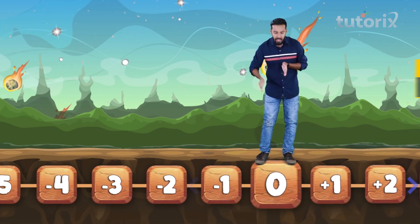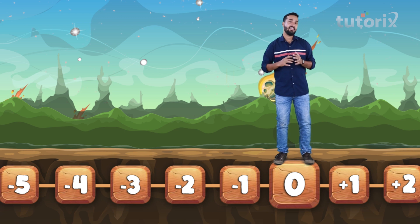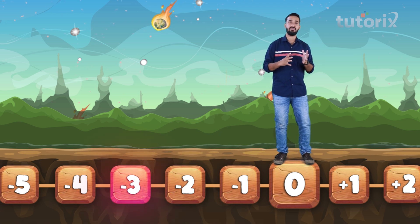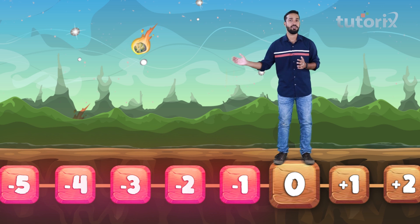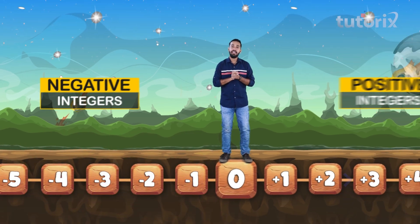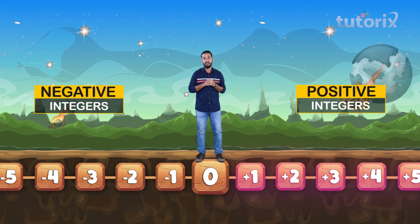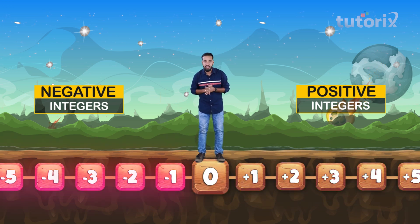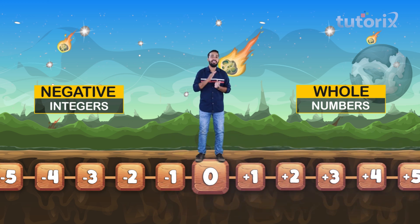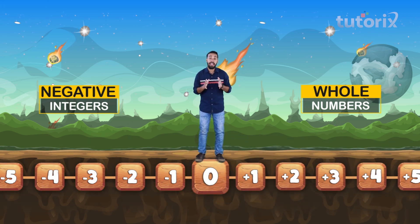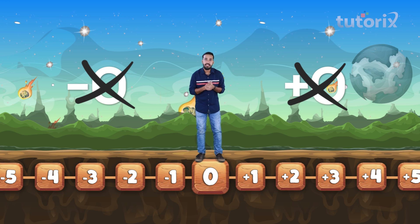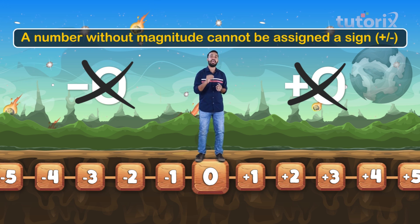Whole numbers are nothing but zero and all positive numbers, or all natural numbers. Now let us look at the left side of zero. There are negative numbers or negative integers like minus one, minus two, minus three, minus four, minus five — it's never ending, it just goes on. These comprise negative integers. Combinedly, integers comprise the positive numbers, zero or neutral, and the negative numbers. Or we can also say integers comprise whole numbers and their negative counterparts, except that of zero, because a number without magnitude cannot be assigned a sign. It's called neutral for a reason.